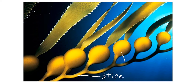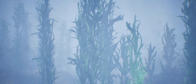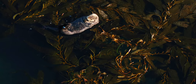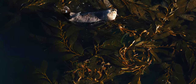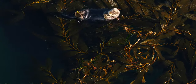Branching off from the stipe are pneumatocysts. Pneumatocysts are these balls of air — "pneumo" meaning air, like pneumatic, and "-cyst" meaning a round ball or a structure. They hold nitrogen in them, and what they do is allow the kelp to float. The kelp wants to reach sunlight because kelp does photosynthesis. You don't want to just lay on the ocean floor; you want to be close to the sunlight so you can get your energy and make your sugar through photosynthesis. So pneumatocysts help float the kelp towards the sunlight.